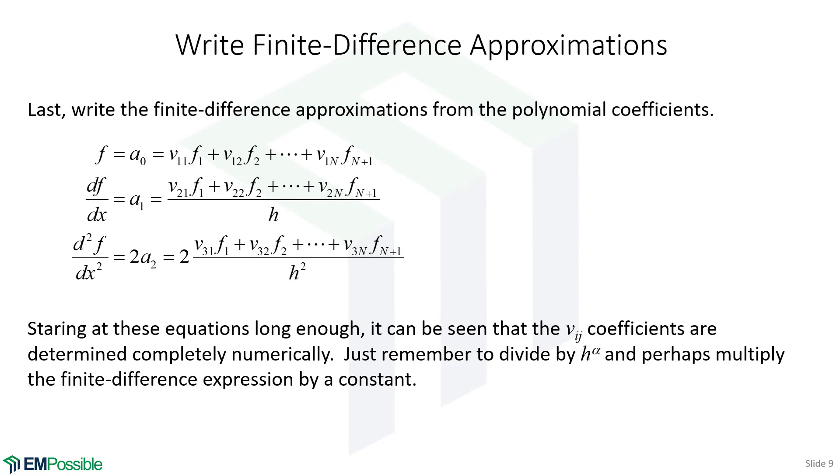Given those, we can write our approximations. We interpolate the function value using the A₀ polynomial coefficient, and that's this line. We can estimate our first order derivative with the A₁ polynomial coefficient. These terms were the second row in that V matrix, but now we divide by the symbolic H.